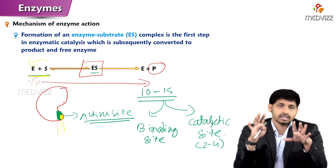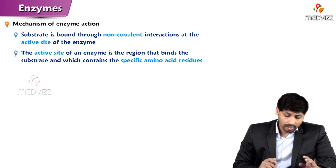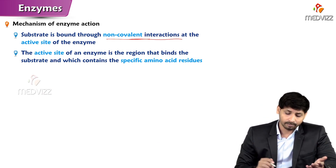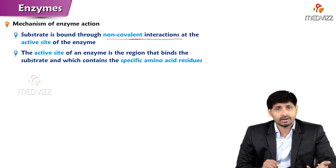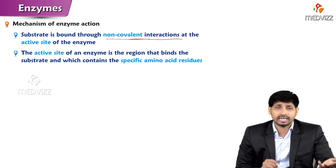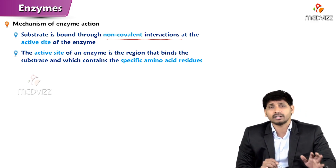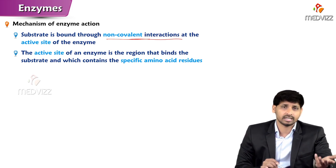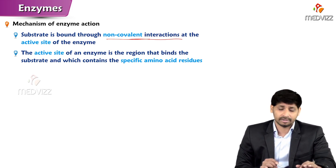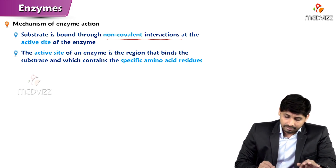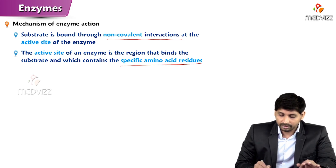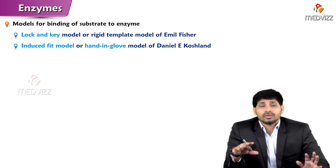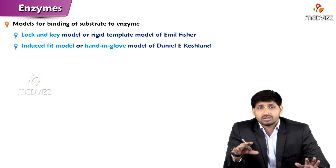The substrate binds to the enzyme through non-covalent interactions — specifically hydrogen bonds, disulfide linkages, and electrostatic interactions. As mentioned, the active site is made up of amino acids: acidic, basic, hydroxyl-containing, or sulfur-containing amino acids. So the active site of the enzyme is the region that binds the substrate and contains specific amino acid residues.